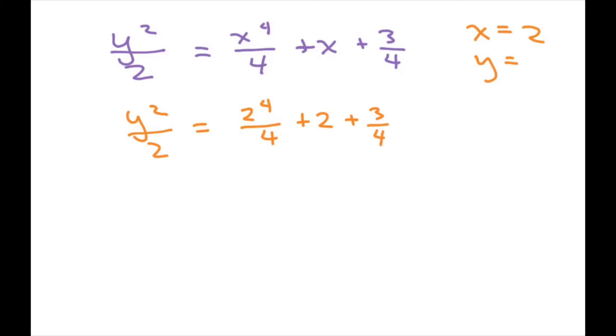So this is 16 divided by 4. So this will be 4, plus 2, plus 3/4ths. And this whole thing is going to equal 27 divided by 4.